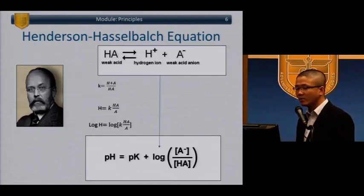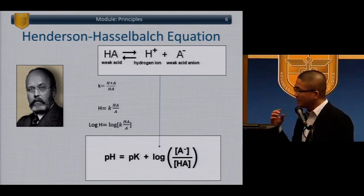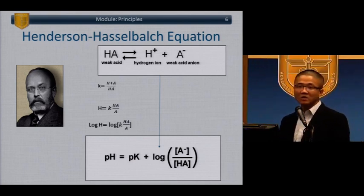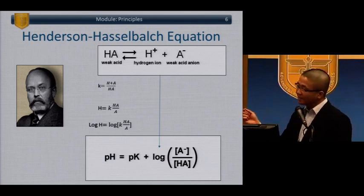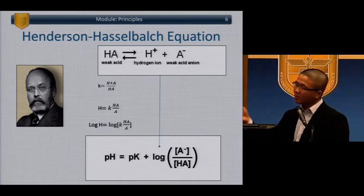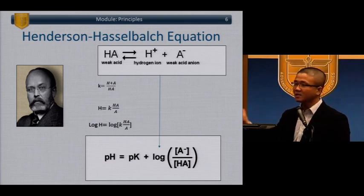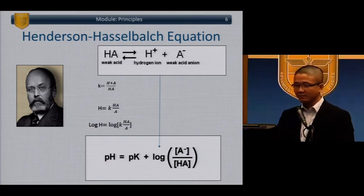Henderson-Hasselbalch's equation has two key points. We can measure pH — it is a log value of what happens when you split a weak acid. The ratio of its conjugated base over the weak acid gives you the idea of what the pH is. More importantly, the equation governs the idea that pH doesn't change very much when you have a conjugated base separated from its weak acid, because of the buffer systems.